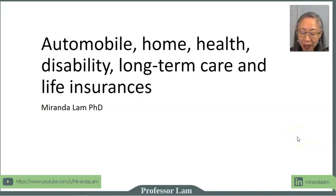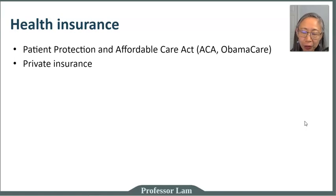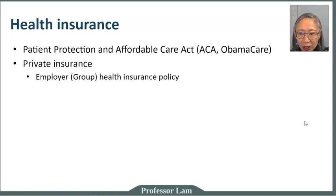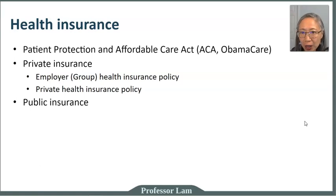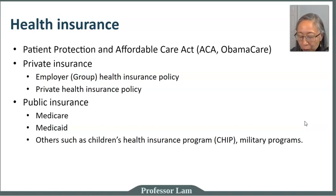Welcome back. In this video we're going to talk about health insurance. First, we're going to go over some of the key provisions in the Patient Protection and Affordable Care Act, often referred to as ACA or colloquially called Obamacare. Then we'll talk about different types of private insurance — most private insurance is provided through employers or group insurance, or you can get your own private policy. Then we'll cover public insurance offered by the U.S. government, including Medicare for individuals over age 65, Medicaid based on income, children's insurance programs, and military programs such as the Veterans Health Insurance Program.